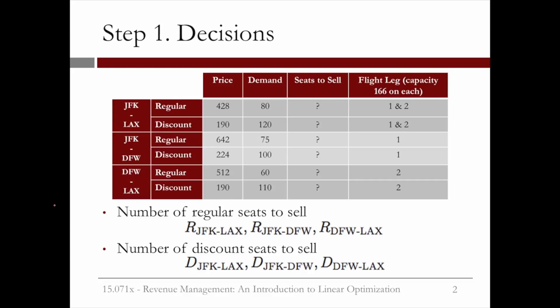So how does our optimization problem change? We now have six types of seats that we can offer. The original two types — regular and discount from New York to LA — and four new types. We can sell both regular and discount seats from New York to Dallas, and regular and discount seats from Dallas to Los Angeles. We know the price of each type of ticket, as well as the forecasted demand for each type of ticket.